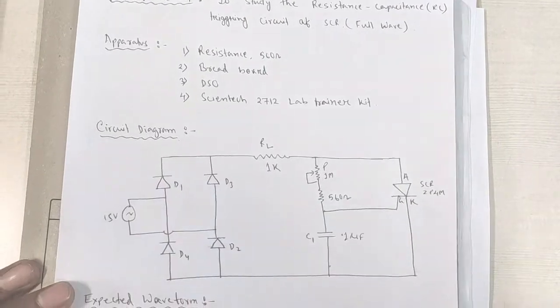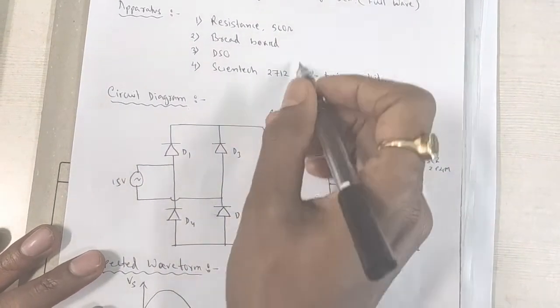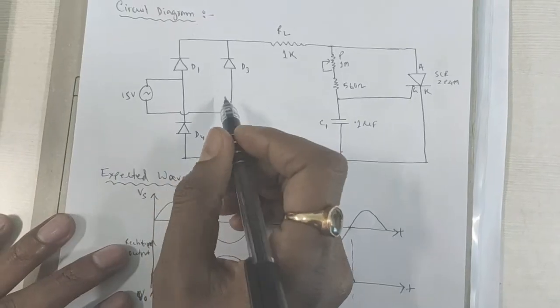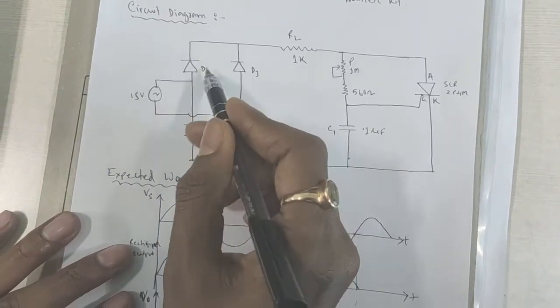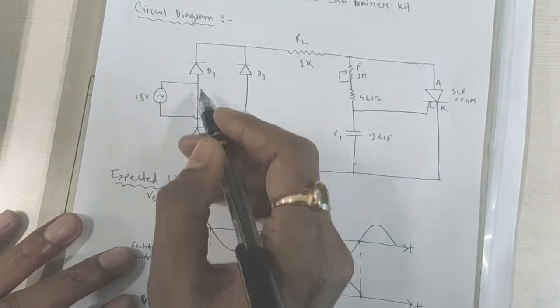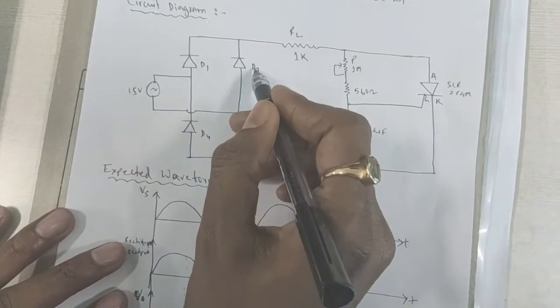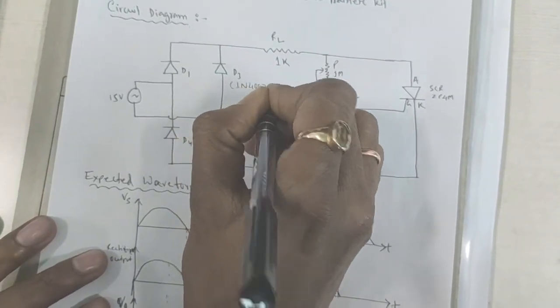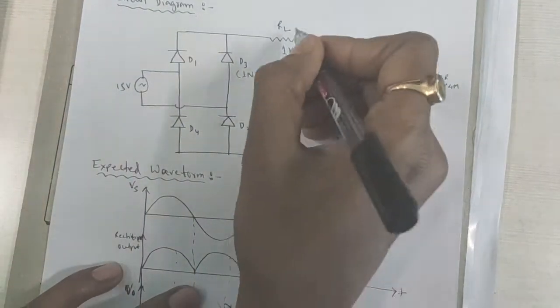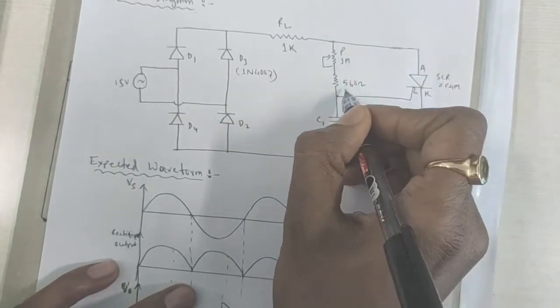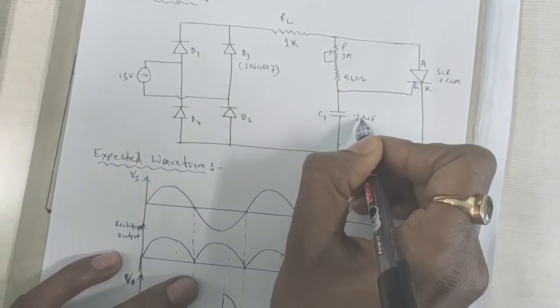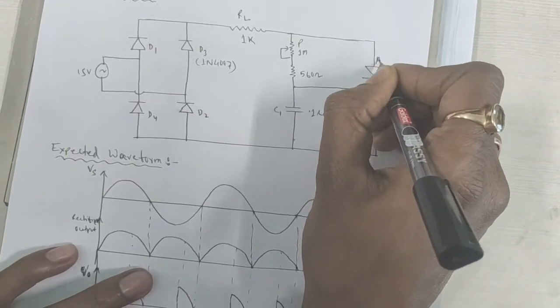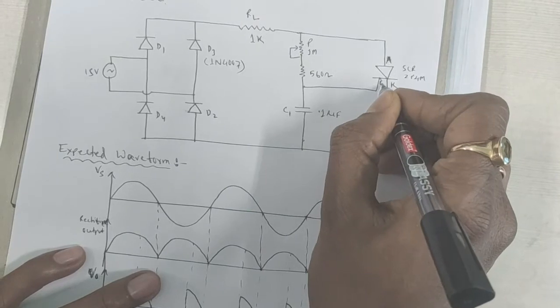This one is circuit of RC full-wave triggering. Here we have used 4 diodes which is as a bridge circuit. Diode 1, diode 2, diode 3 and diode 4 which is 1N4007. RL resistance which is 1K, potentiometer 1 megaohm, 560 ohm, capacitor 0.1uF and this is SCR 2P4M. Anode, cathode and gate.